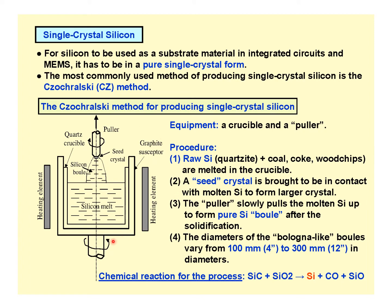In the Czochralski process, the raw silicon in molten form is a combination of silicon carbide and silicon dioxide. As it melts, the material disintegrates into three components: silicon, carbon monoxide, and silicon monoxide. After this chemical process, the only solid part remaining is silicon; the other two components are gaseous and evaporate, leaving only the solidified silicon.